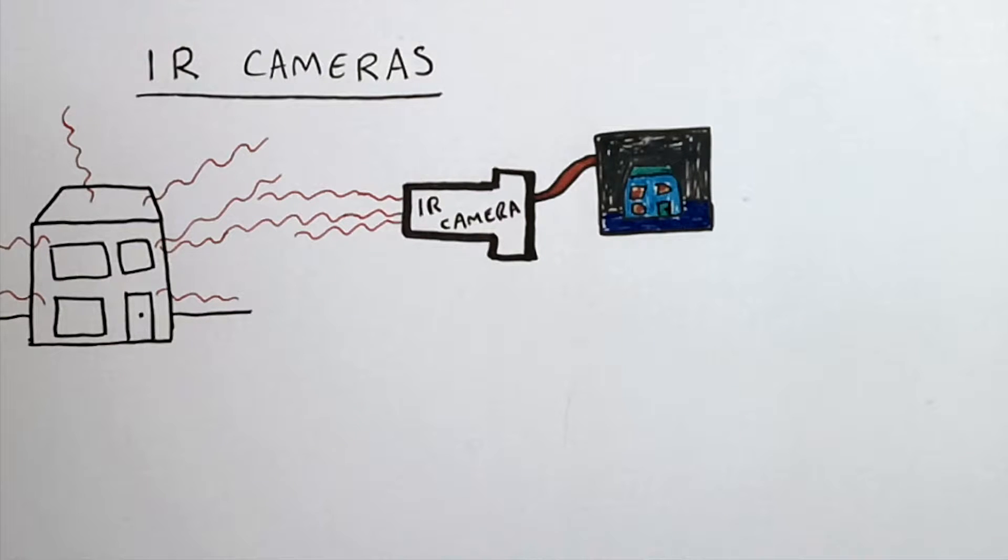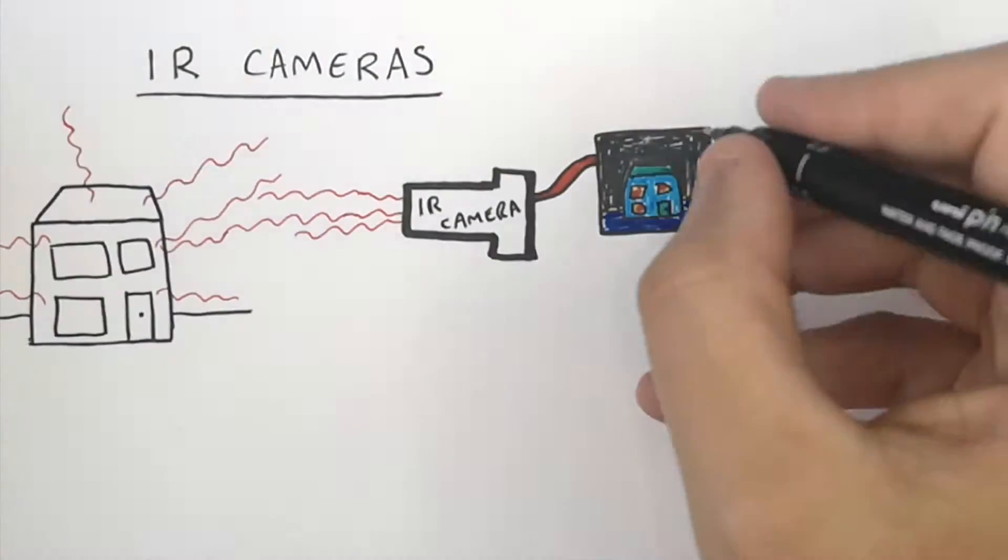As you can see here, the red windows are showing where the most infrared radiation is being emitted from. So let's recap.